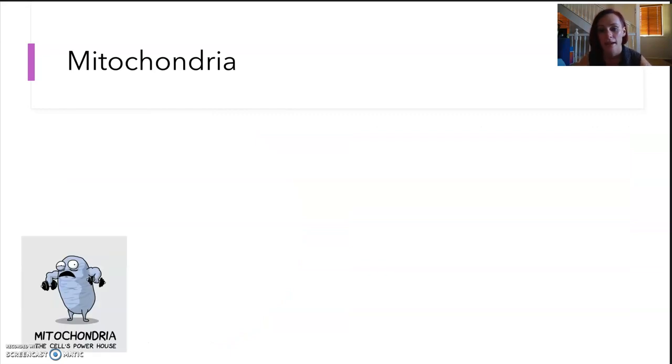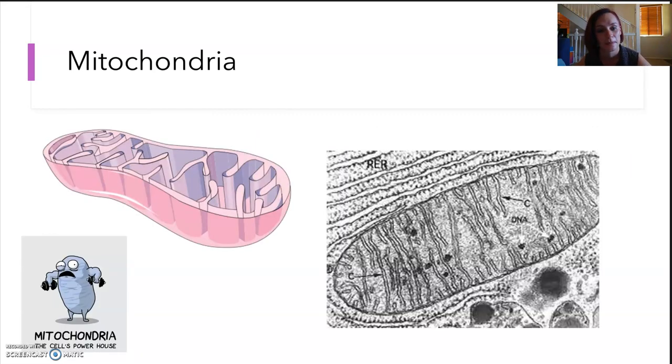Mitochondria is our favorite. It is the powerhouse of the cell. It is involved in cellular respiration. It produces ATP, which is our energy currency in the cell, and it is abundant. These are abundant in cell types like muscles, where need a lot of energy.